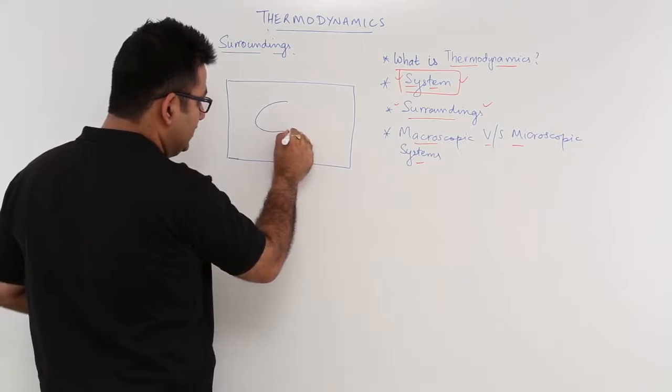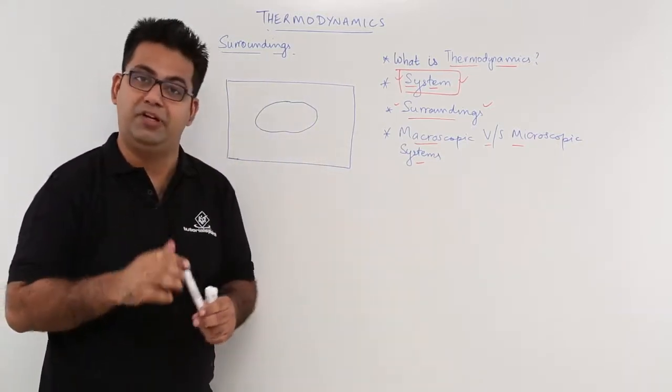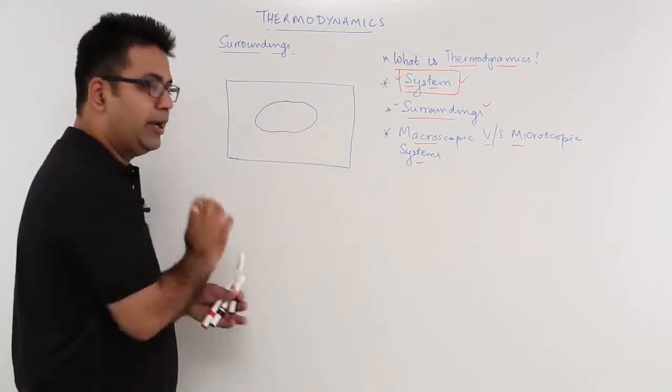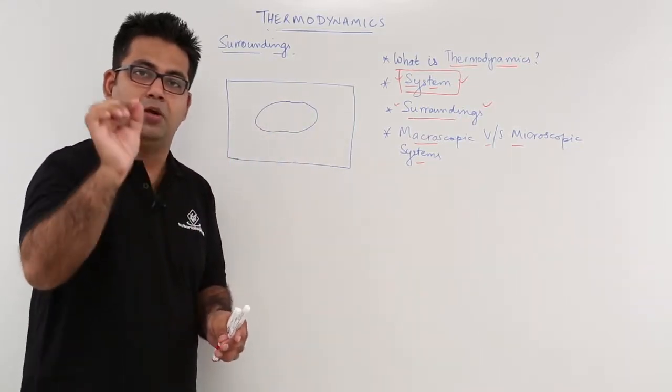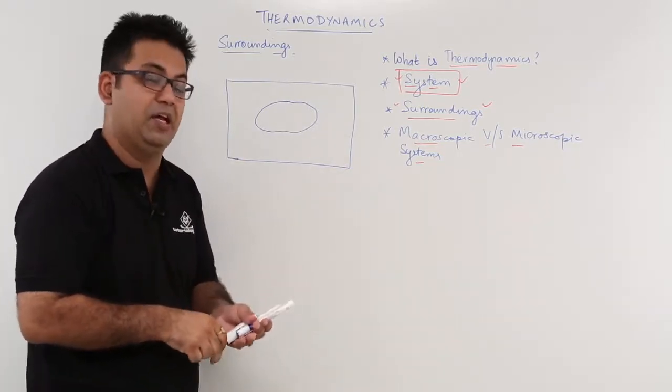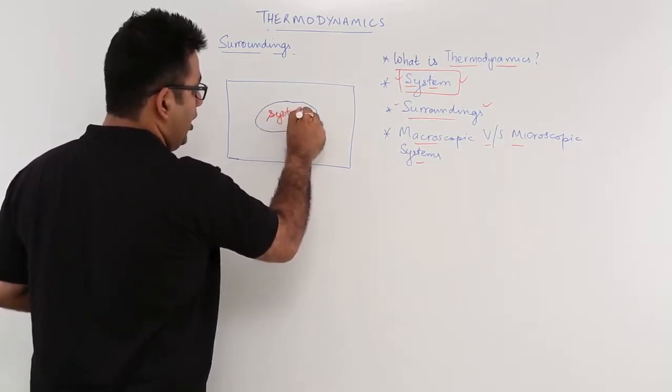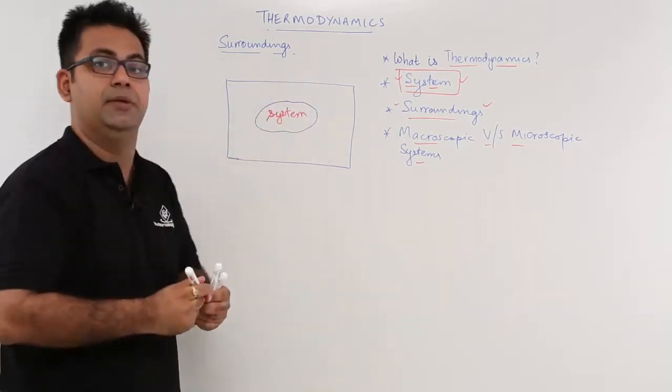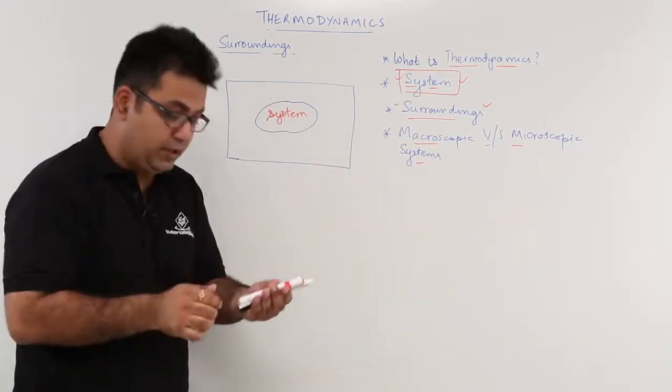Let me carve out a certain area for some thermodynamic observations. This arbitrary shape or this arbitrary area which is an area of focus for my thermodynamic calculations becomes the thermodynamic system. Whatever which is not a part of the system, but is a part of the universe becomes our surroundings.